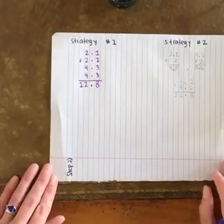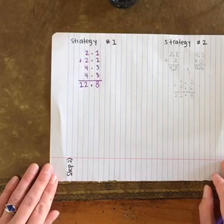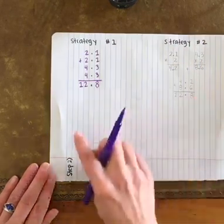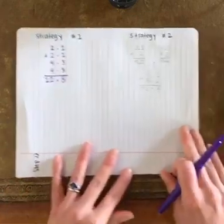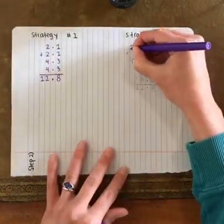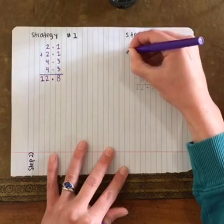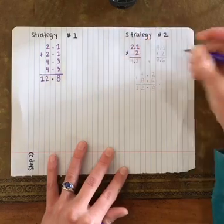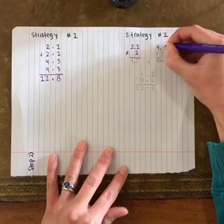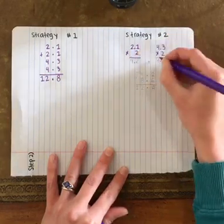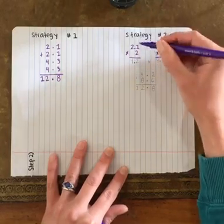I'm also going to show you how to multiply to find the perimeter. And if we multiply and do this second strategy, then that helps us check our work to make sure that this is correct. We can also multiply the width, 2 and 1 tenths, 2 times. And the length, 4 and 3 tenths, 2 times. And then add those two products together. Let's do this one first.